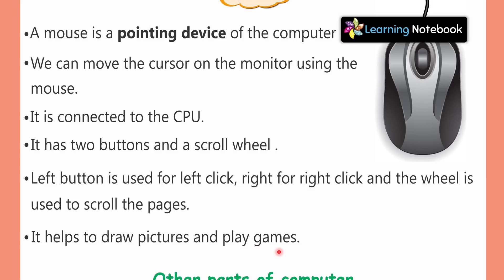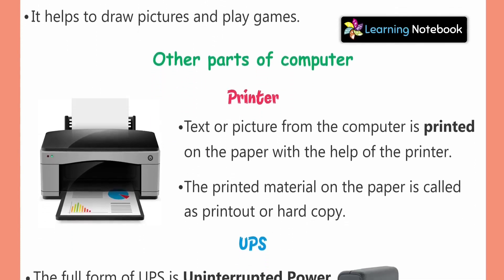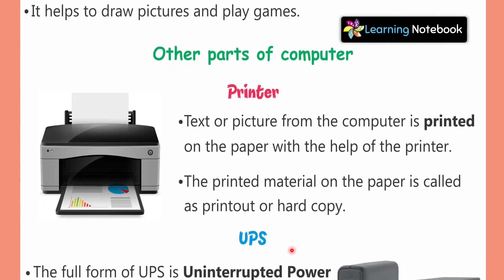So friends, those were the main parts of the computer: monitor, CPU, keyboard, and mouse. Now we are going to learn about other parts of the computer. First is the printer. A picture or document from the computer is printed on paper with the help of the printer. Look here — this is a printer.